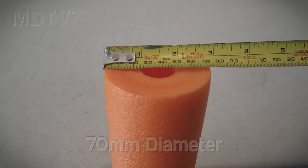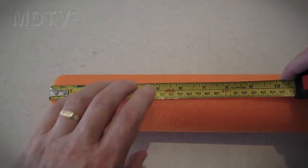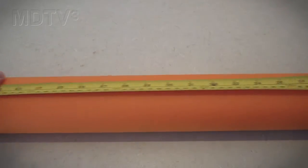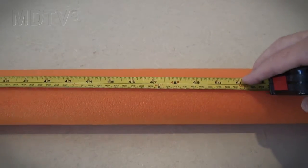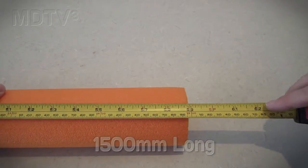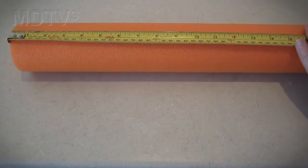Grab yourself a standard pool noodle about 70 millimeters in diameter. You get these from most department stores. The pool noodle is approximately 1500 millimeters long. From a single pool noodle we can construct two tank racks.